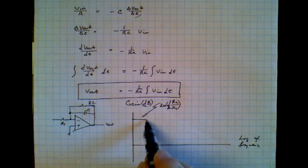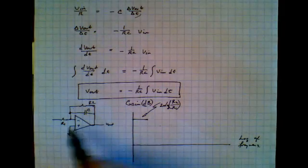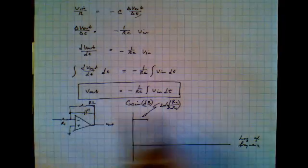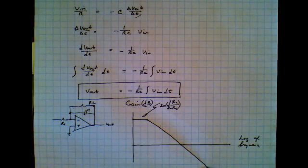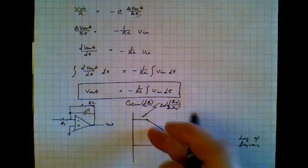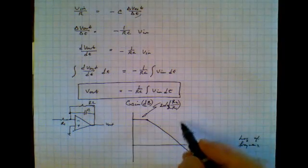Now, beyond this point, we'll get an RC roll-off because of R1 and the C. And it'll look like this. And this roll-off is going to be a straight line on the Bode diagram.